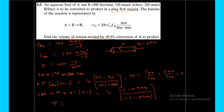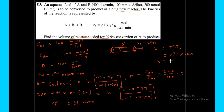Tau equals 0.31 minutes. We need to calculate the volume of the plug flow reactor. V equals tau times V0 equals 0.31 times 400, giving V equals 124 liters. This is the volume of the reactor needed for 99.9% conversion of A to products.